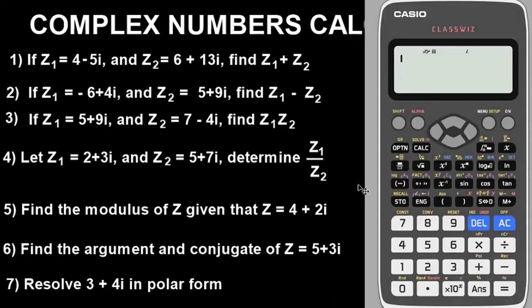This is the Casio calculator. The first thing you have to do is to clear your calculator. The essence of doing that is to put your calculator in default mode, because along the way you might have put your calculator in a different mode or stored a different number in it before. To avoid unnecessary errors while solving whatever problem you want to solve, you are advised to clear.